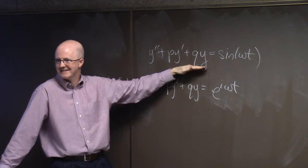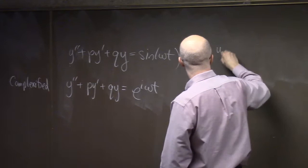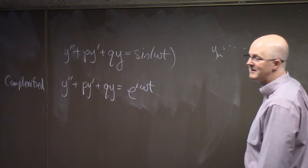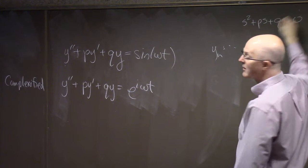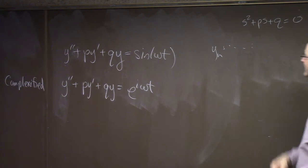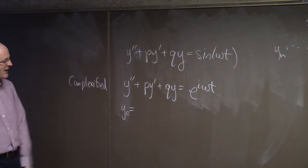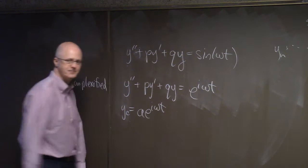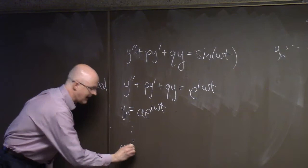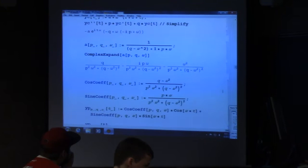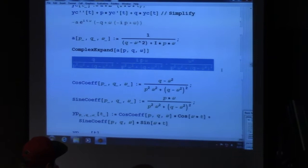You've got to think about putting zero on the right-hand side and finding yH — find eigenvalues of the matrix. There's a quicker method for finding yH; don't forget that. We're focused mostly on yP, which we find first by finding a complexified solution. We call it A times e to the i-omega-t. Solving for A in terms of p, q, and omega gives us: A equals, real part is (q minus omega-squared) divided by (q minus omega-squared squared plus p-squared omega-squared).